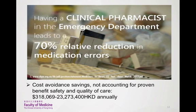An emergency medicine pharmacist has a similar relative risk reduction of 70% in medication errors. Cost avoidance savings annually have been shown in five different studies to be anywhere between $318,000 to $23 million Hong Kong dollars with the addition of an emergency department pharmacist.